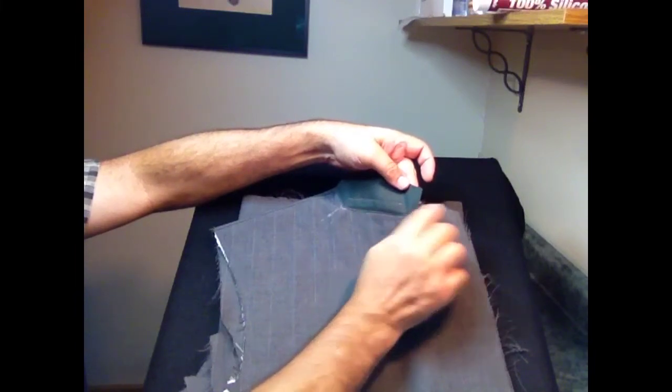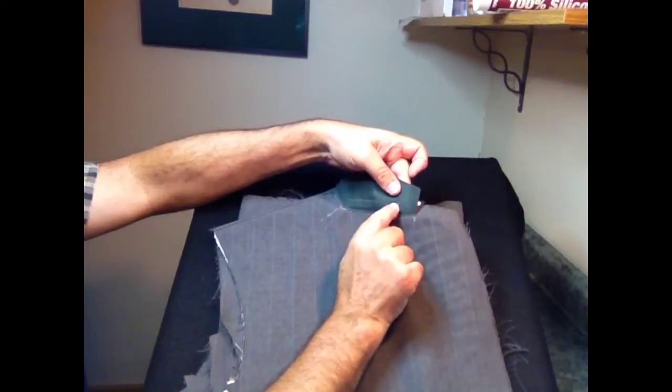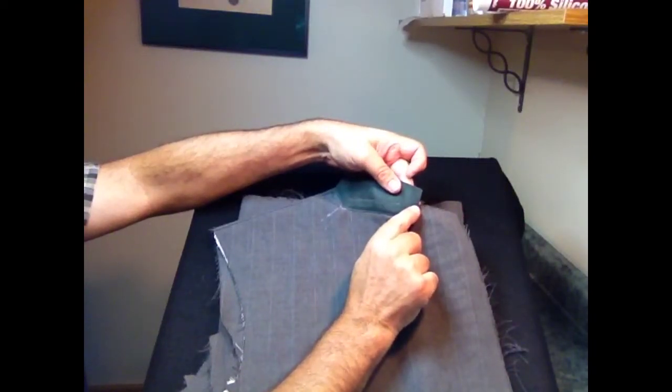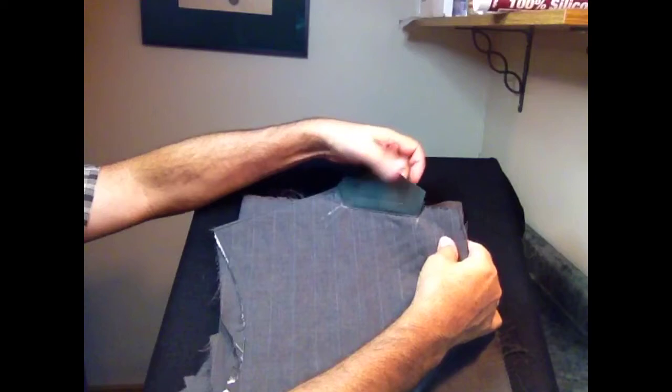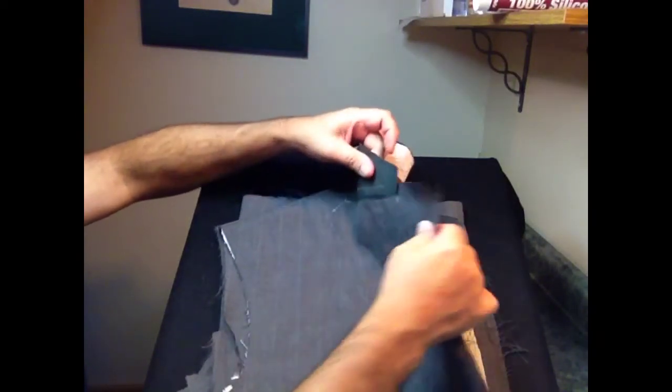The purpose for that is in a later step this will actually fold down, and if you've got this stitched all the way to that edge it won't fold. So in a later step I'll go inside here and I'll clip down to that stitching to make it easier to fold.